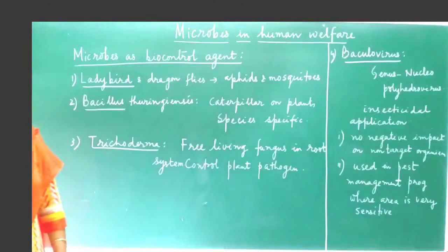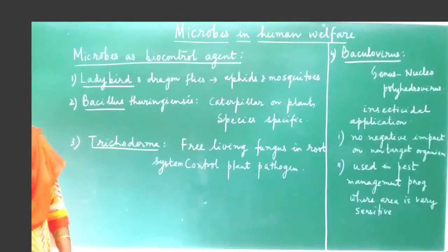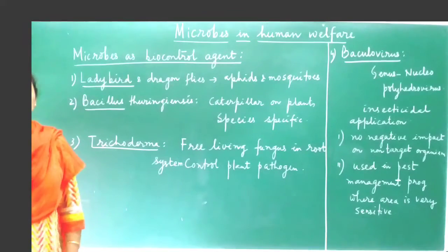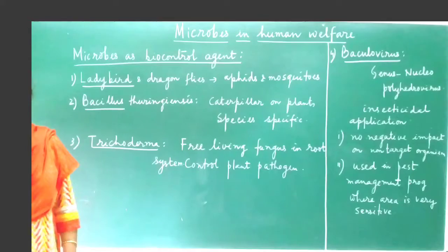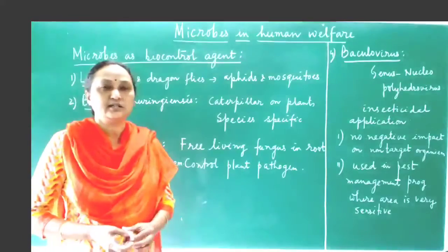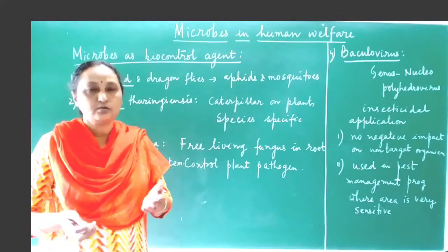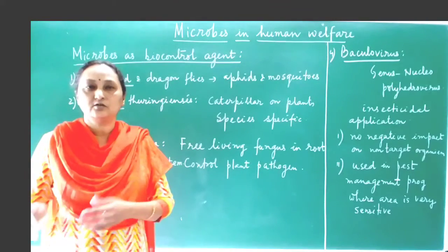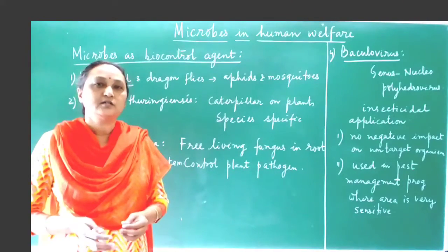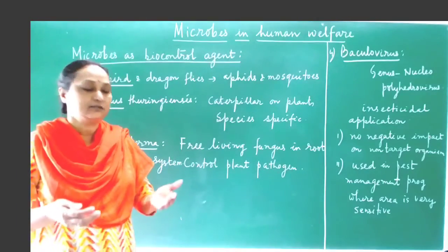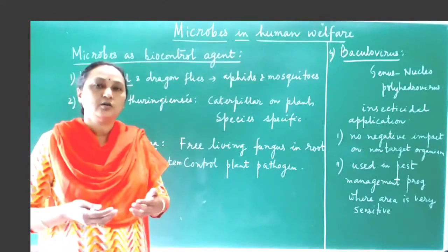Today I am going to explain about microorganisms as biocontrol agents. In agriculture, we use different types of chemical compounds — for example, insecticides and pesticides. These are used to destroy insects or pests, because insects can destroy the crop plants and pests can produce different diseases in the crop plants, causing an automatic loss of productivity.